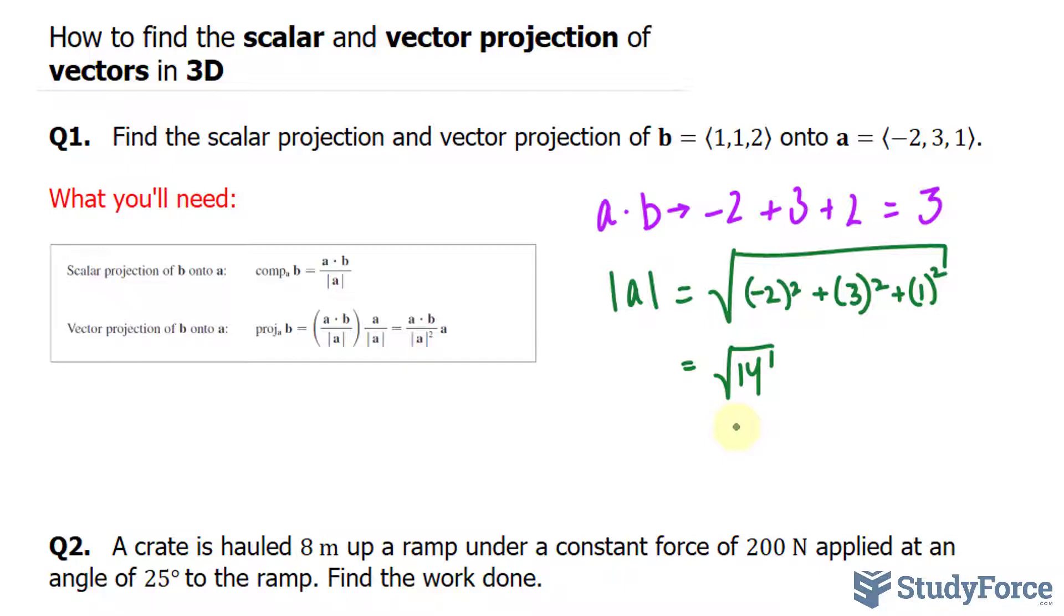Therefore, the scalar projection of B onto A is equal to 3 over the square root of 14.